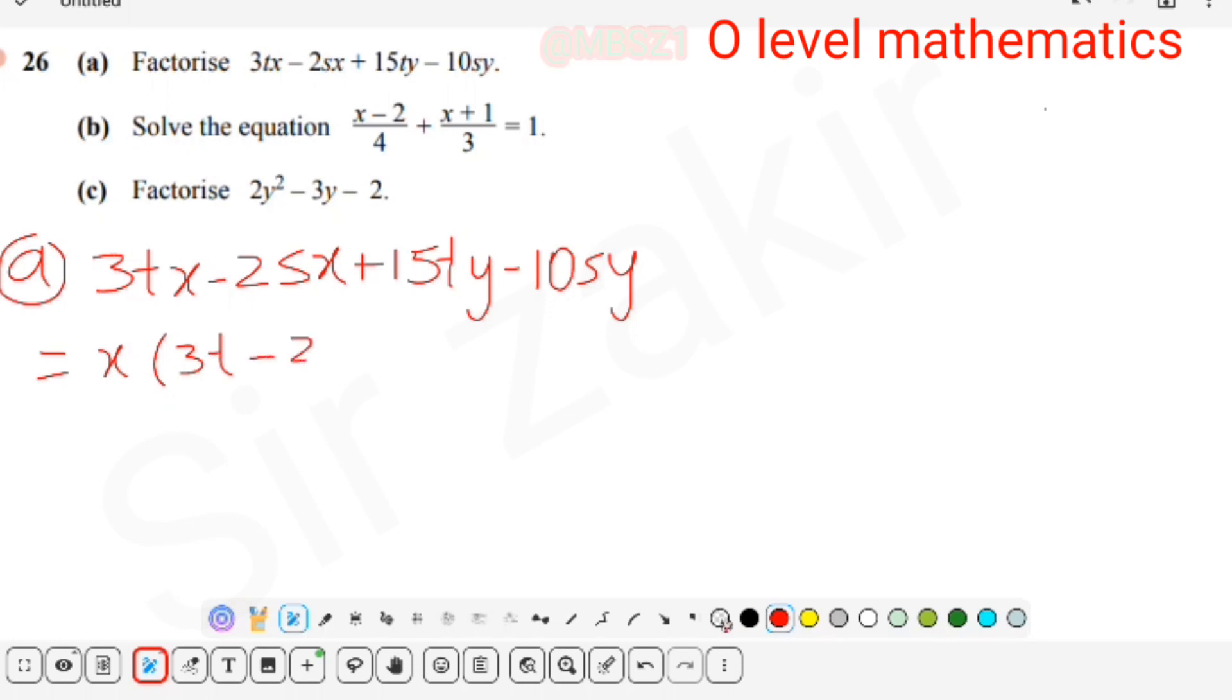Plus 15 and 10 - both are divisible by 5, so 5 is common, and both have Y common. So when we take 5Y common, what is left: 5 divides 15, 3 is left and T will also appear in bracket. Minus 5 divides 10, 2 is left, and S remains inside bracket.